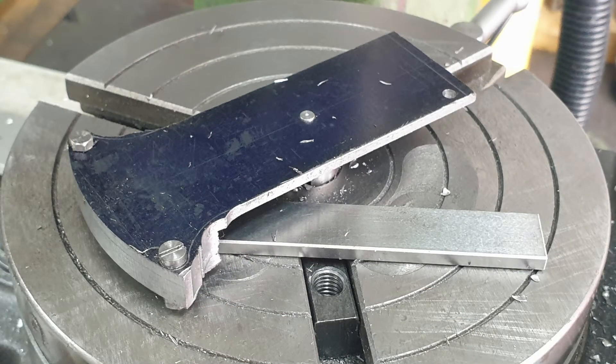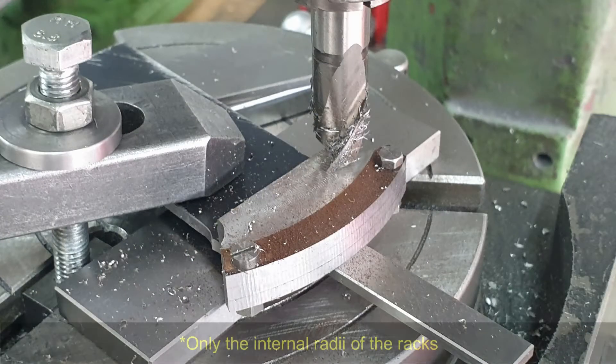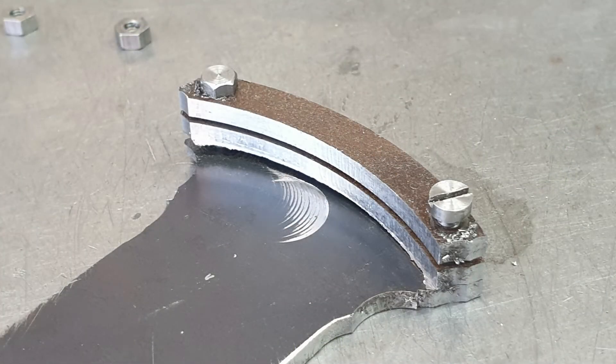After cutting the outer radius I flipped the whole lot over on the rotary table and used a slot drill to cut the internal radius. It would appear that my workpiece wasn't particularly level on the rotary table, but those marks will clean up easily enough with some emery.